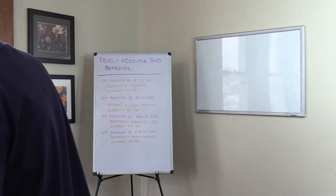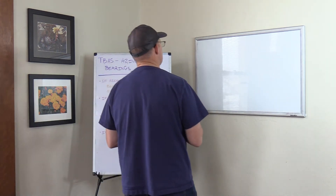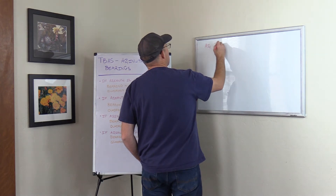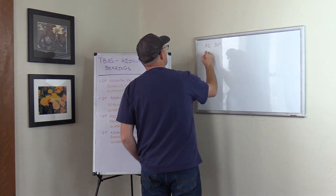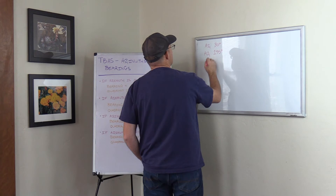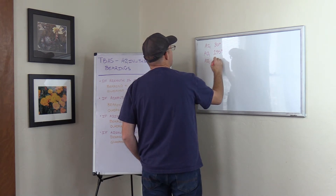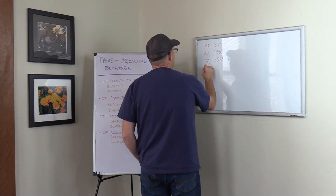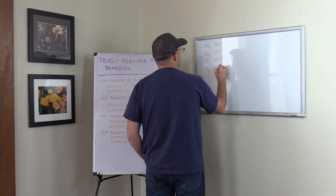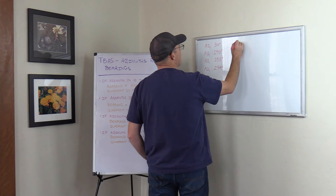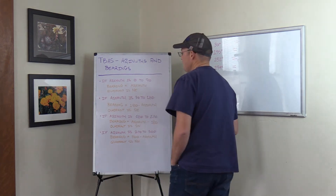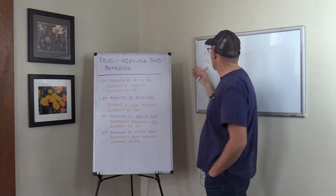Now I want to show you guys how these rules actually work, so let's look at some examples. I'm going to give you four azimuths and we're going to convert them. We're going to do azimuths of 30 degrees, 195 degrees, 252 degrees, and 294 degrees. So we want to know what these are as bearings.